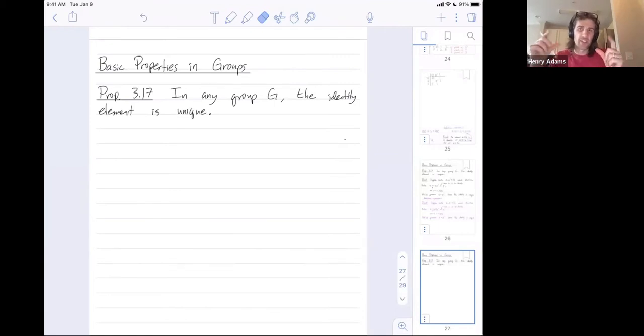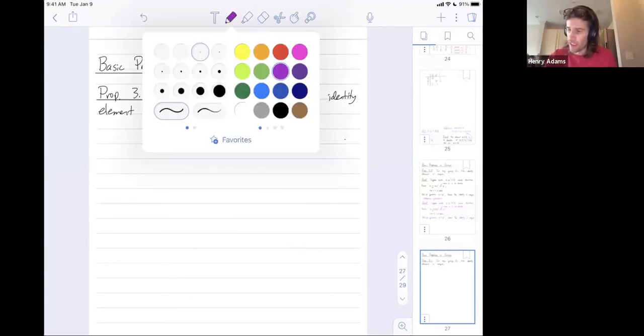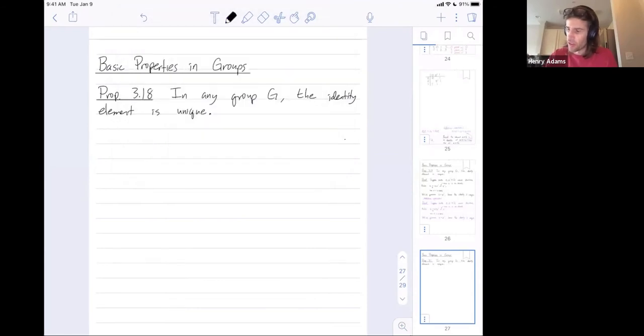Inverses, think of inverses as matching between different elements in a group. So we need to phrase this proposition differently. Okay, so in any group G, the inverse, and now it's not just the inverse of the group. We have to say the inverse of an element g in that group is unique.